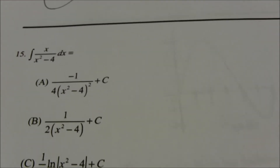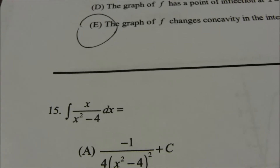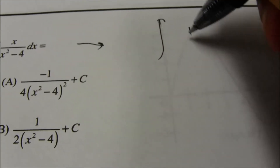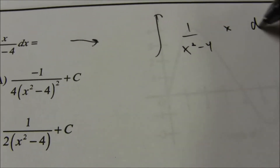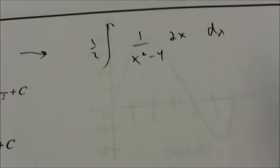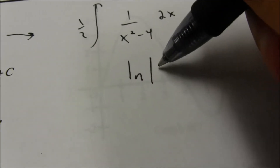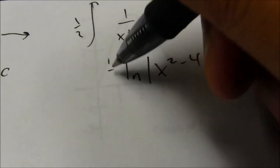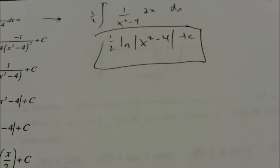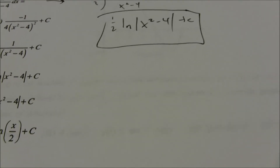Number 15: we have the integral of 1 over x squared minus 4, which can be rewritten with x squared minus 4 to the negative 1. The derivative of the inside function is 2x; we need a 2x so we multiply by 2 and balance with 1/2. That gives us the natural log function of the denominator: 1/2 times the natural log of x squared minus 4, plus C. That is choice C.